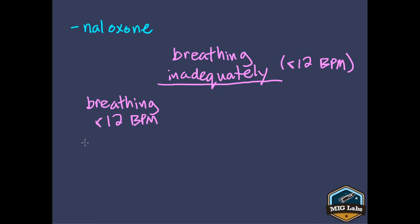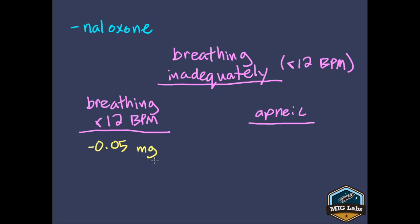The first category is patients who are breathing inadequately — less than 12 breaths per minute — but are still breathing and not totally apneic. For these patients, because they are still breathing, we can be more conservative. The recommendation is to give doses of 0.05 mg, titrating every one minute, stopping once they start breathing adequately again — above 12 breaths per minute.